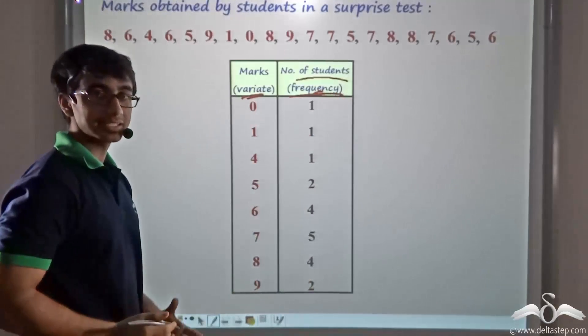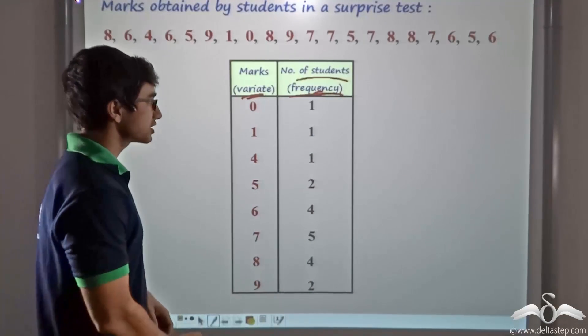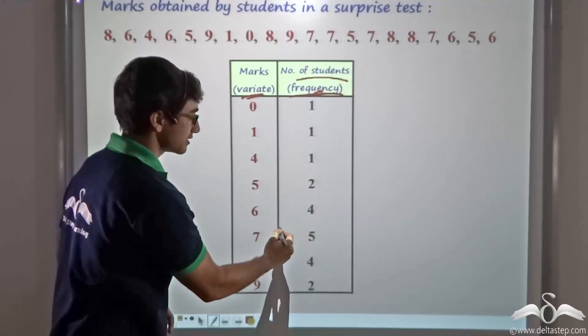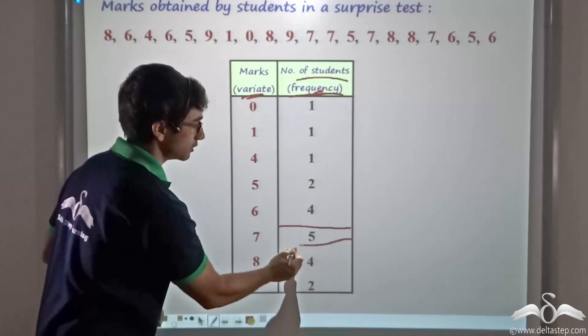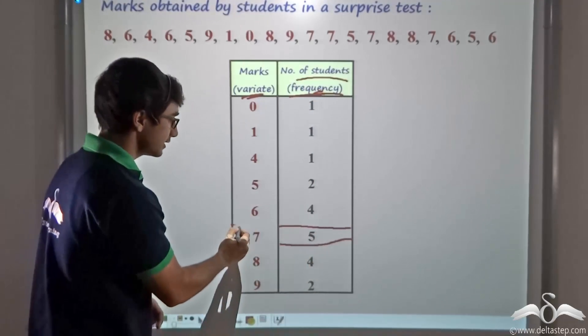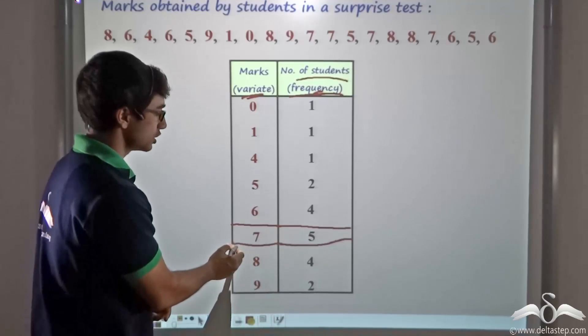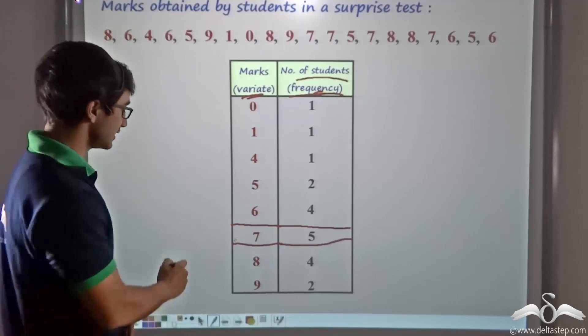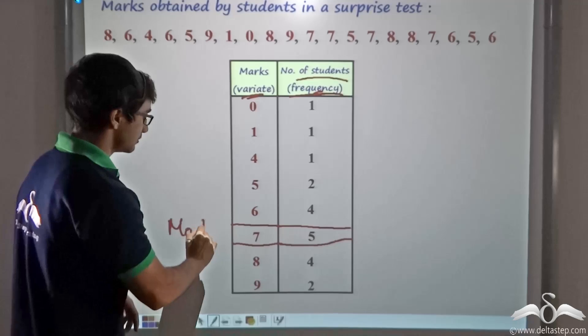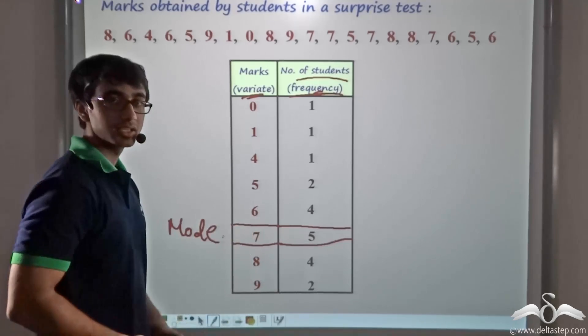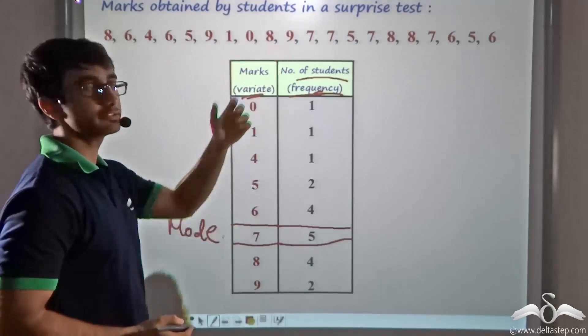Since the frequency is present as a column here, we can directly say which variate is the mode. The frequency which is the highest in the frequency column—its corresponding variate will be the mode of the given set of observations. So in this case, the number 7 or the variate 7 is the mode.